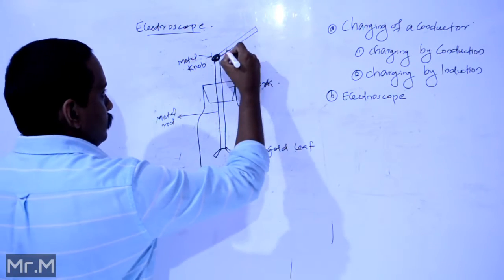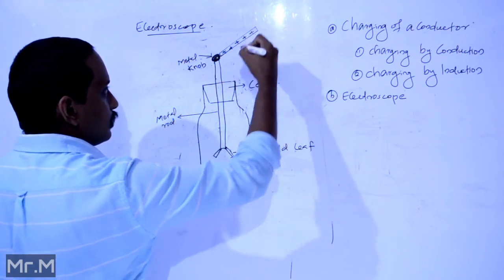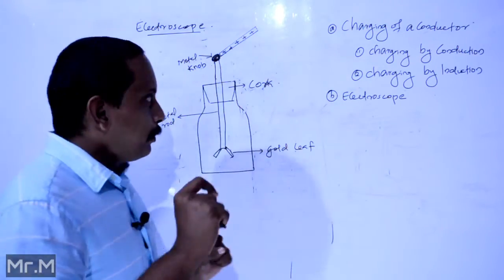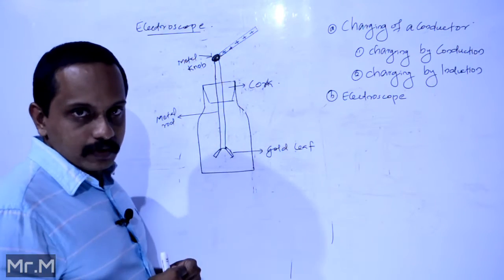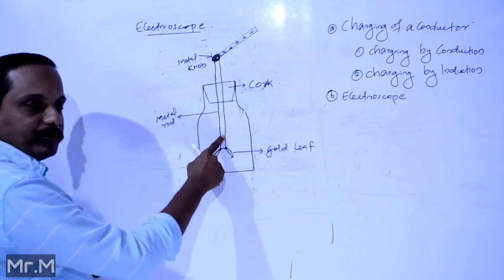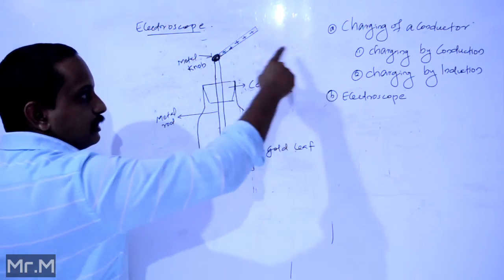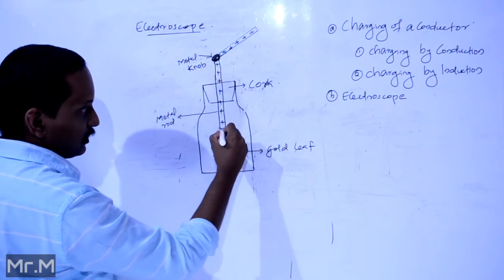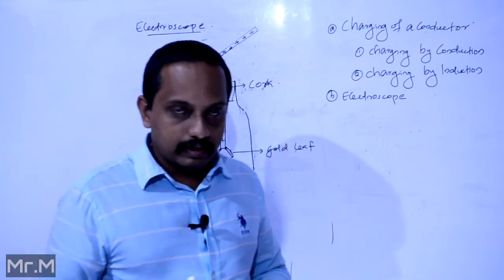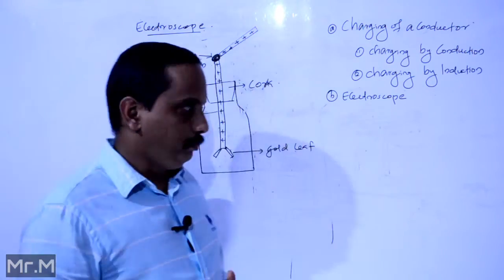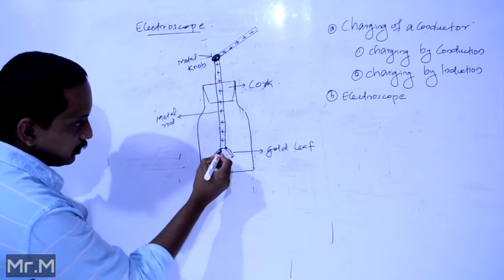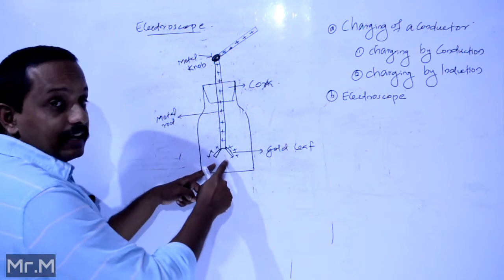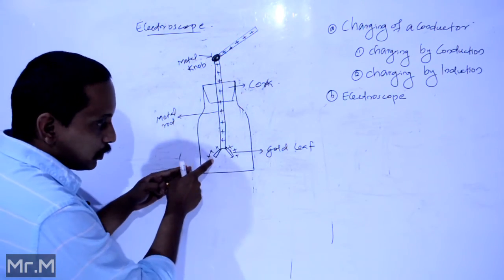Suppose we touch a positively charged object to the knob of the electroscope. By conduction, the metal rod and gold leaf become positively charged. Both gold leaves become positive, and due to repulsion between like charges, the two gold leaves diverge apart. This divergence indicates that the object is charged.